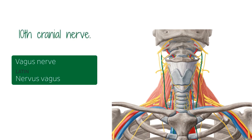The vagus nerves are well known as the tenth cranial nerves. These nerves extend through the jugular foramen and then pass into the carotid sheath between the internal carotid artery and the internal jugular vein, down to the neck, chest, and then abdomen, where they contribute to the innervation of the different organs.